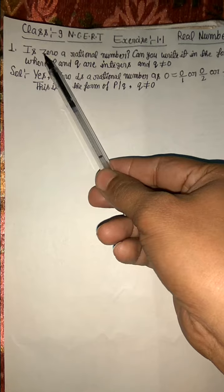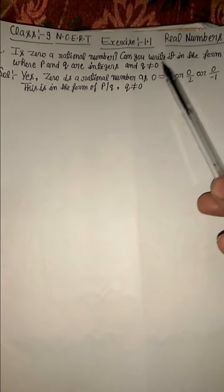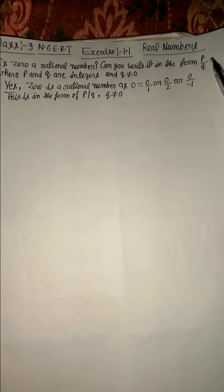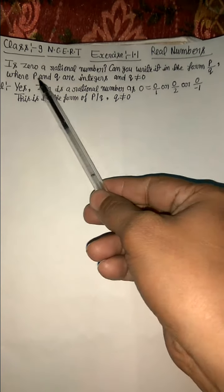First question: Is 0 a rational number? Can you write it in the form P upon Q where P and Q are integers and Q does not equal to 0?